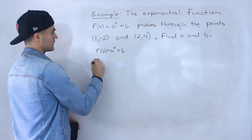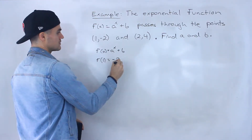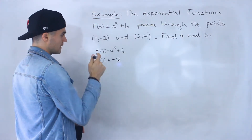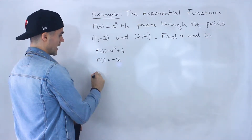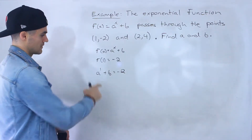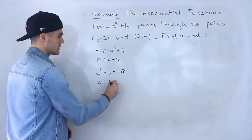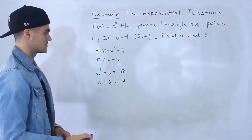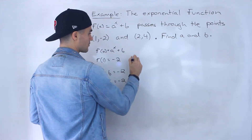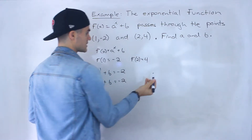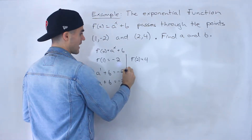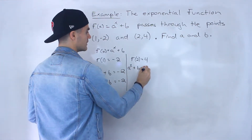Using this first point, we're told that f of 1 equals negative 2 — at an x value of 1, the y value is negative 2. So we plug in 1 for the x value, giving us a to the power of 1 plus b equals negative 2, which simplifies to a plus b equals negative 2. That's one equation. For the other equation, we use the second point: f of 2 equals 4, so we plug in 2 for x, giving us a squared plus b equals 4.